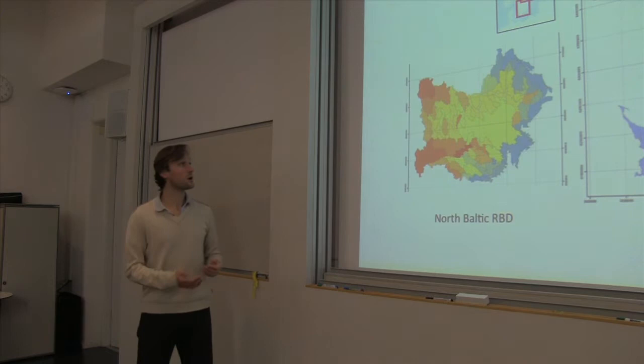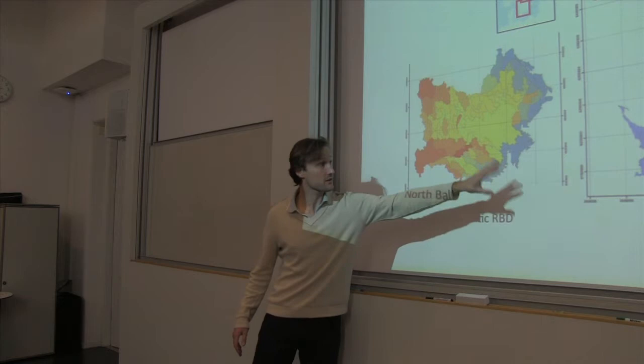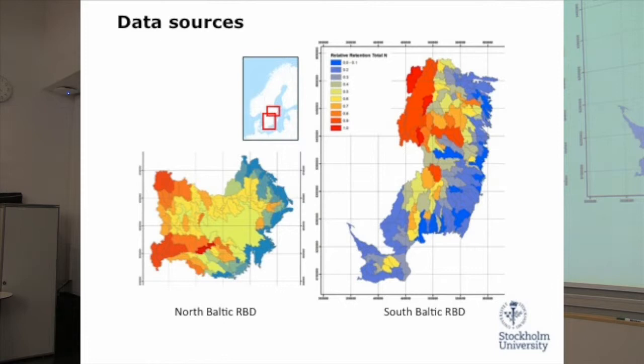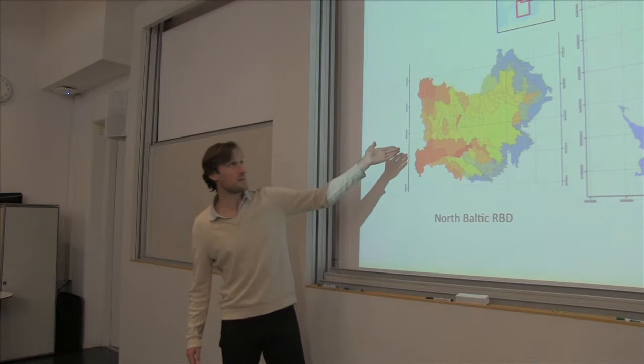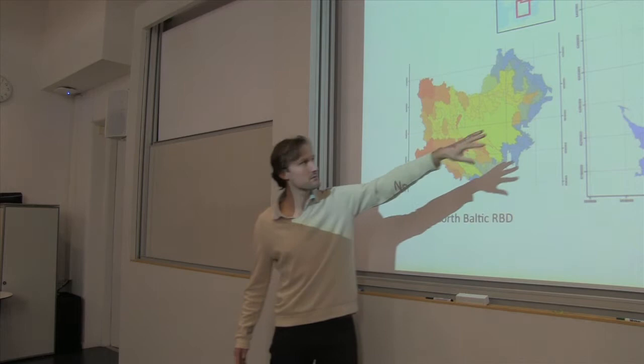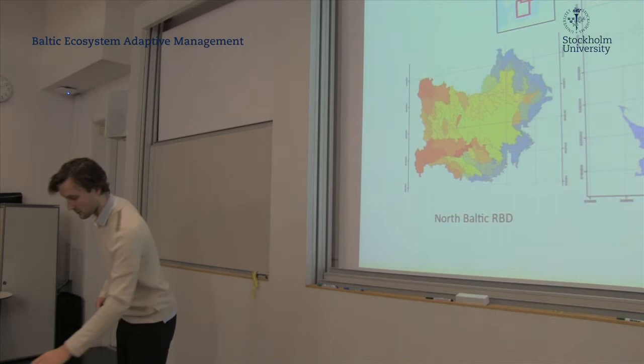We looked at the North Baltic river basin district and the South Baltic river basin district, and here you can see the retention for the various catchments in these two river basin districts. Blue indicates very low retention along the coast, and red indicates near-maximum retention, quite often inland. But there are differing patterns.